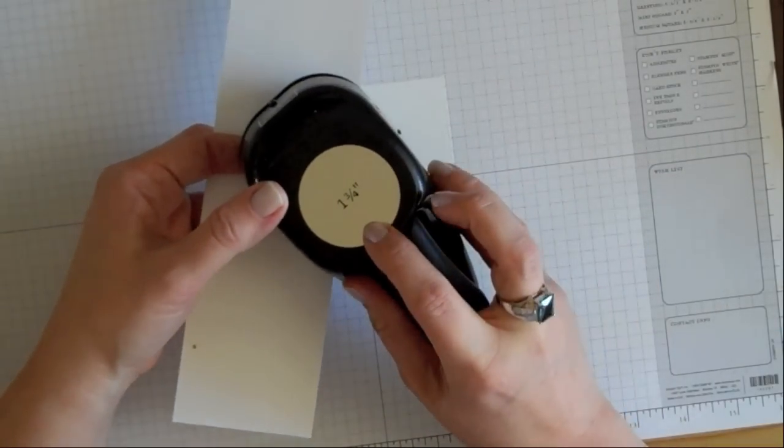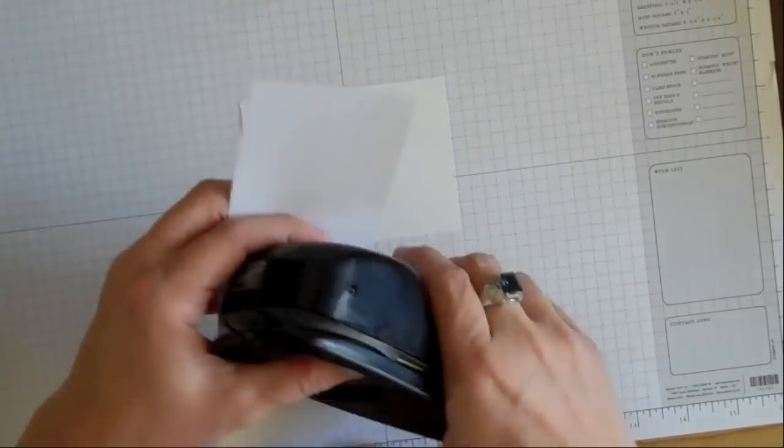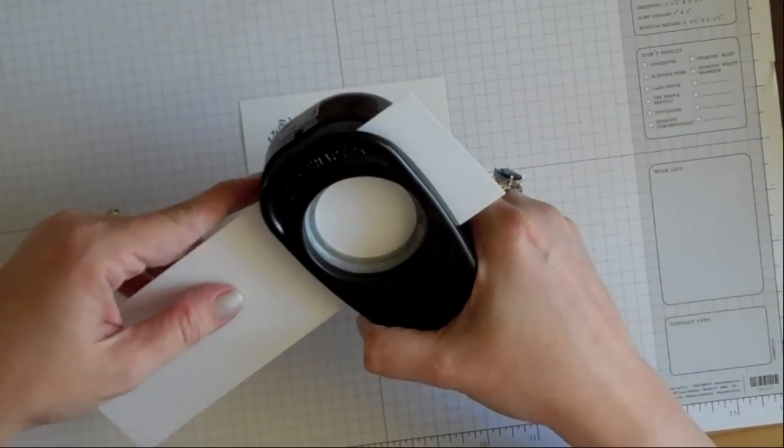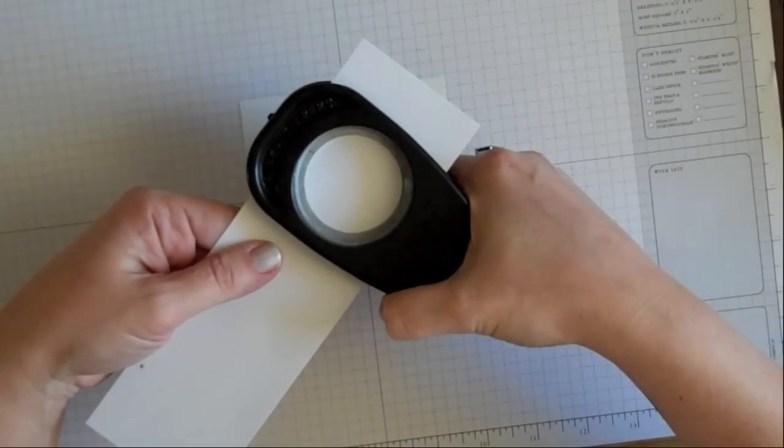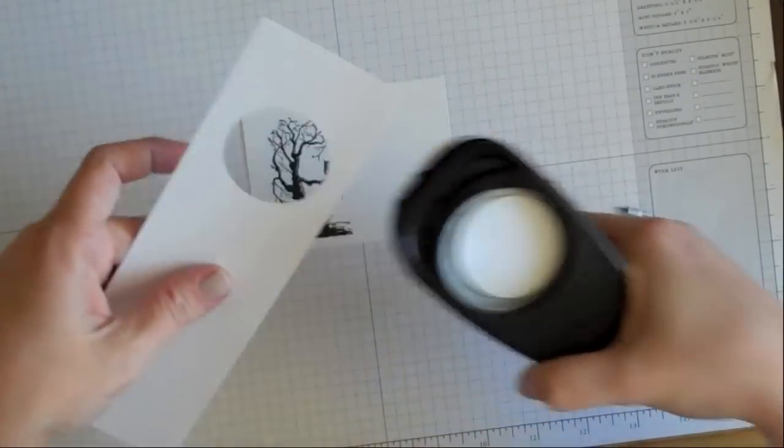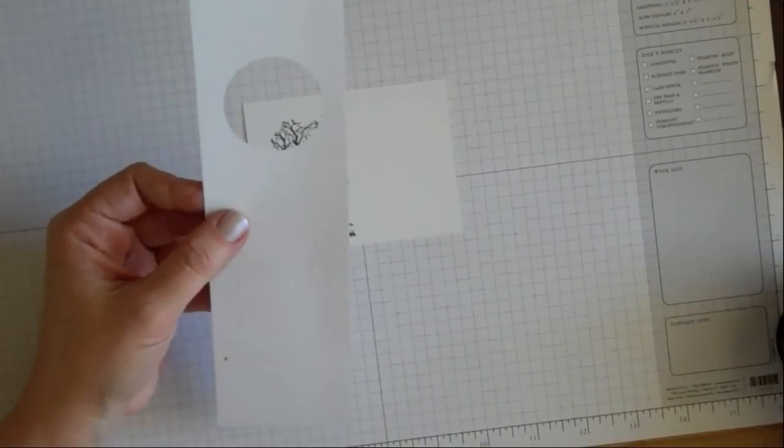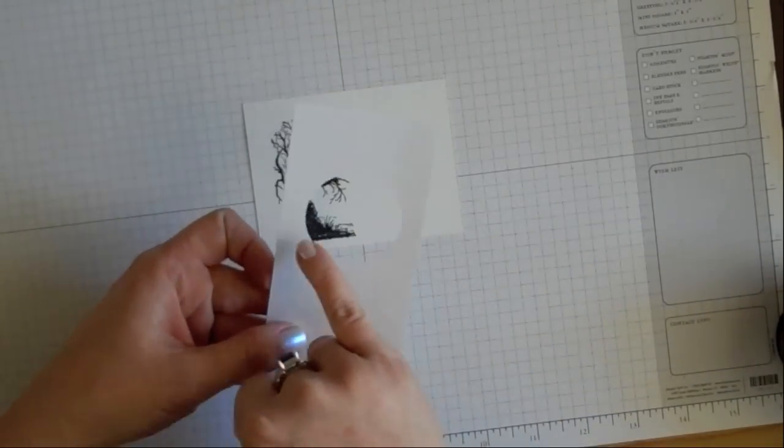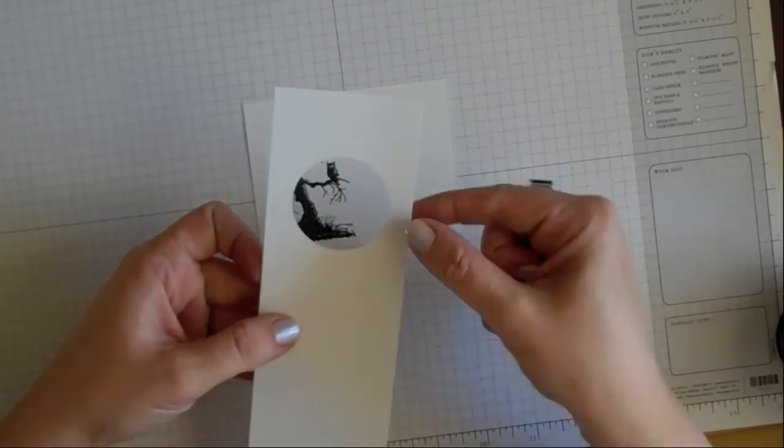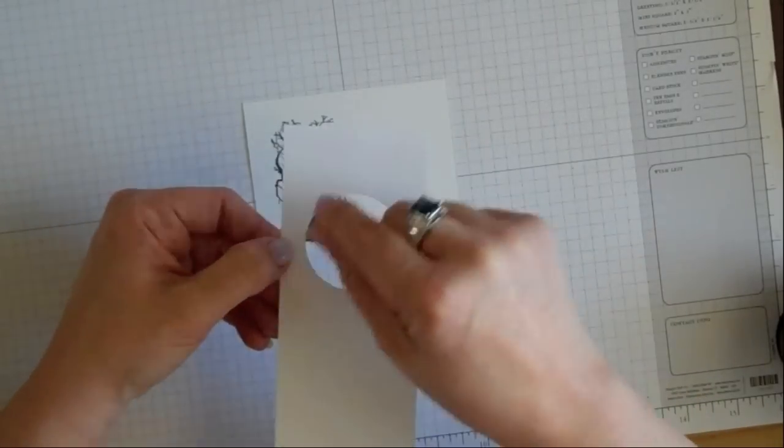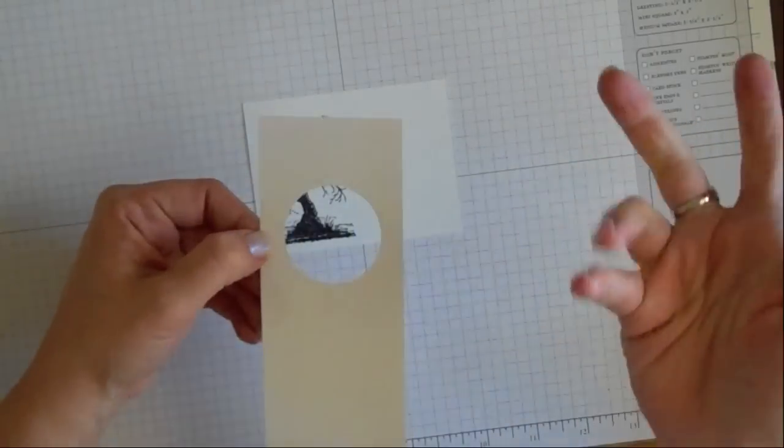I'm going to use the one and three quarter inch circle punch and punch a circle somewhere in the middle of that piece of paper. I like to cut my paper a little bit wider just so I have a little bit of space on each side because if you get it too narrow and you're sponging around it, you could end up going over your mask.